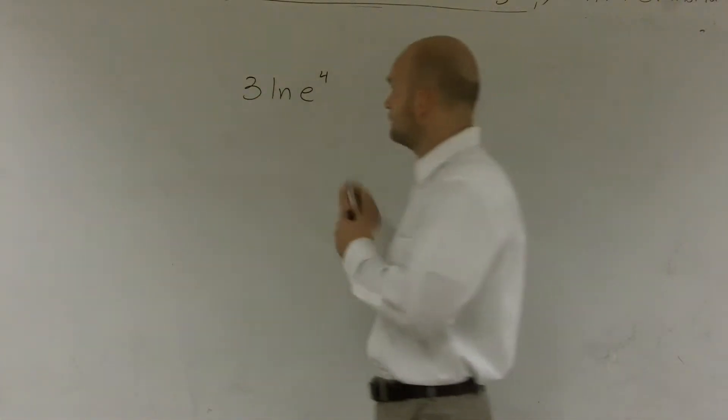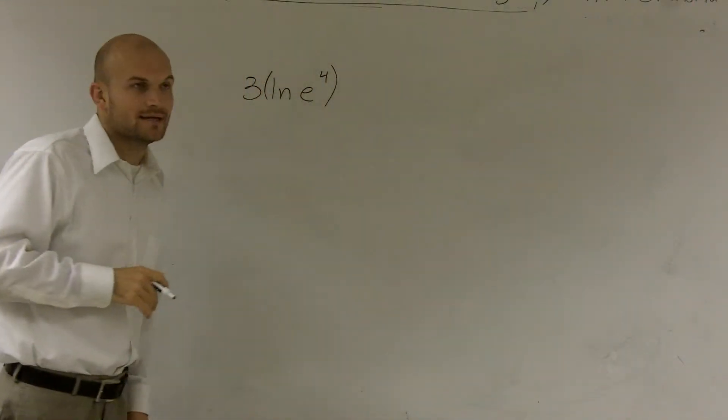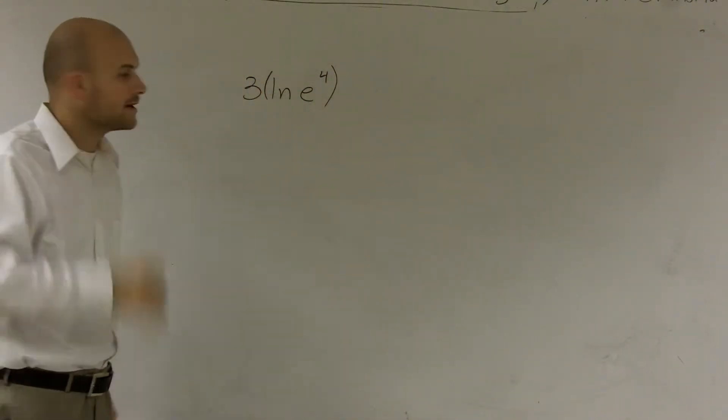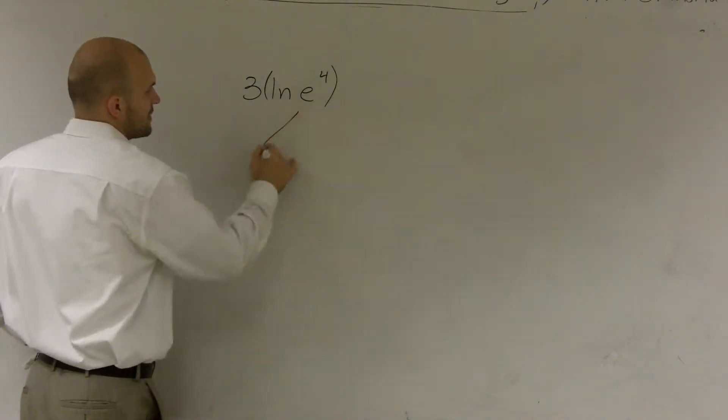We have 3 multiplied by the logarithm ln of e to the fourth. There's a couple of rules we can remember, and I'm going to solve this two different ways.